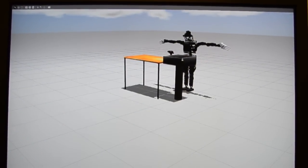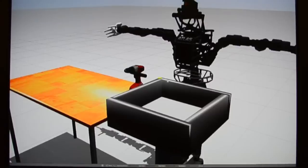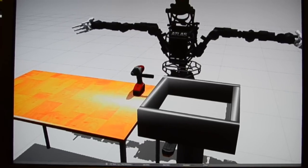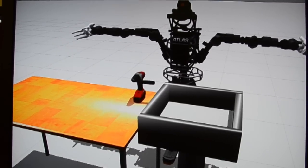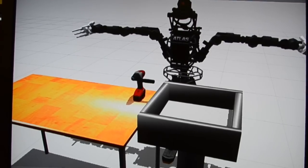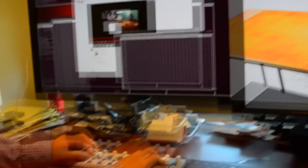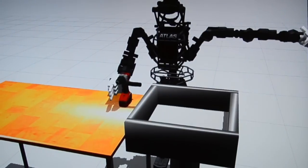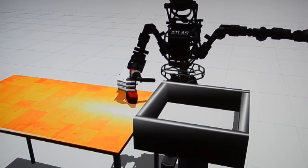So the second qualification world is meant to focus on manipulation. And here, the Atlas is standing in front of the table with a screwdriver and a bin, and the goal is to move the screwdriver into the bin. So John is going to demonstrate using our fancy keyboard teleop control tools to move the Atlas robot into a position to hopefully grasp the screwdriver and pick it up.